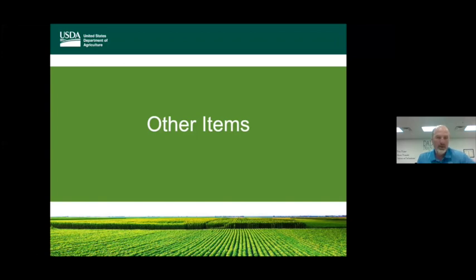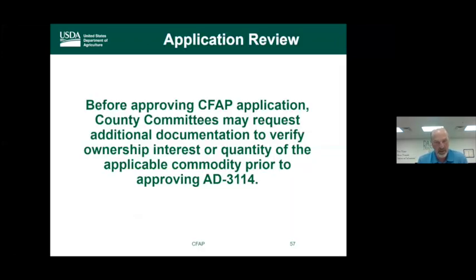The CFAP application is a certification of total 2019 production of eligible commodities and the quantity subject to price risk as of January 15th. Contracts and production records are not submitted at time of application but must be retained. Local county committees will review applications and may request additional documentation to verify ownership or commodity interest before approving. This concludes the non-specialty crops and wool section.